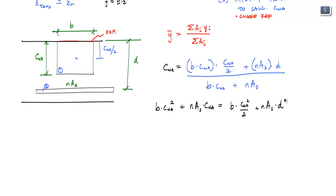And when I rearrange this, and if I rearrange this one more time, I'll end up with this quadratic equation where C and A is my only unknown. And then you can solve for C and A using the quadratic formula or whatever fancy calculator you got. Now, this is the transformed area method.